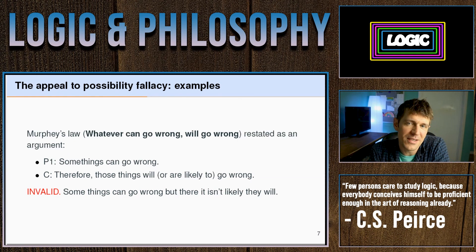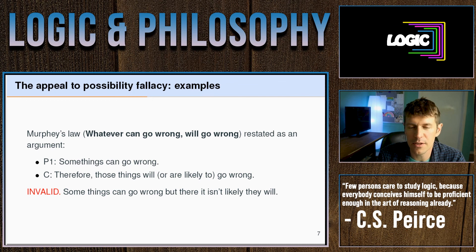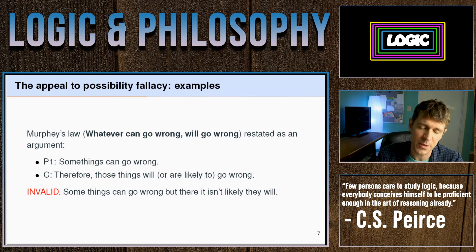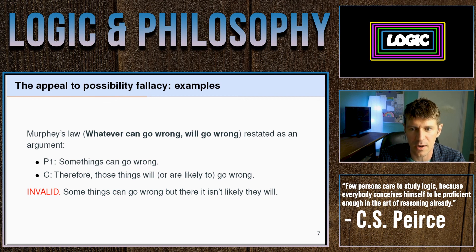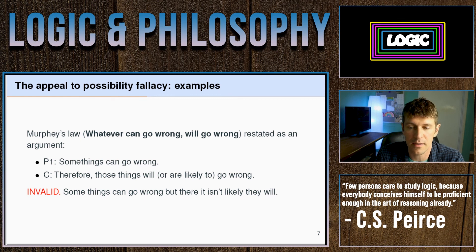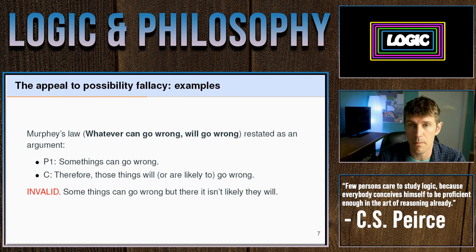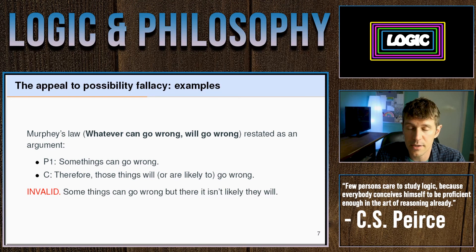The most famous example of the appeal to possibility fallacy is Murphy's Law: whatever can go wrong will go wrong. This is studied in a number of disciplines, specifically engineering. Restated as an argument: there are certain things in the world that can go wrong, and of those things that can go wrong, they are likely to go wrong or they will go wrong. Again, this is invalid. There are certainly many things that could go wrong or fail or break, but it isn't likely — and certainly not actual — that they will go wrong.